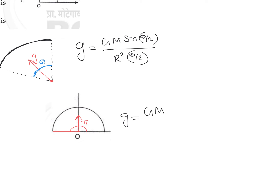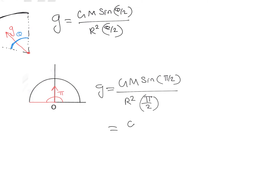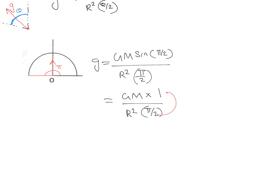So we write this as G times m times sine(π/2), divided by r² times (π/2). Note: students sometimes make the mistake of writing 180 degrees — we cannot write degrees in SI units, it must be in radians, so we write pi. Sin(π/2) is sin 90°, which equals 1. So we get Gm divided by r² times (π/2), which simplifies to 2Gm divided by r²π.